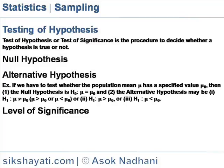Level of Significance. The main object of hypothesis testing is to make a judgment about the difference between the sample statistic and a hypothesized population parameter. The next step after stating the Null and Alternative Hypothesis is to decide the criteria to be applied for acceptance or rejection of the Null Hypothesis.